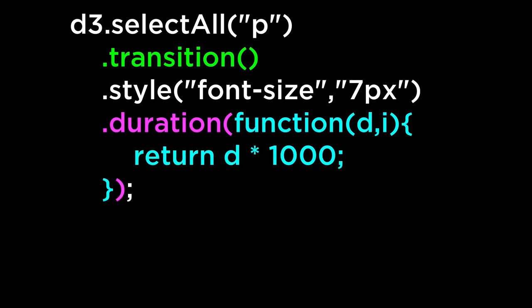This is the third example: instead of using the element index, we use the data attached to the current DOM element to specify the transition duration. The data attached to the elements were the numbers 5, 4, 3, 2, and 1. So the last element will have a duration of 1 second, the second to last a duration of 2 seconds, and so on until the first element has a duration of 5 seconds. Alright, let's go to the JavaScript console to test out the transition durations.